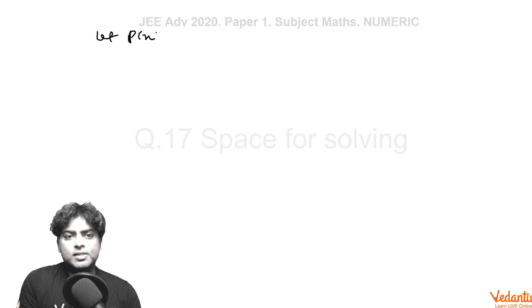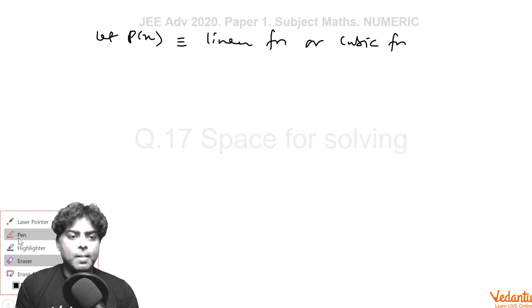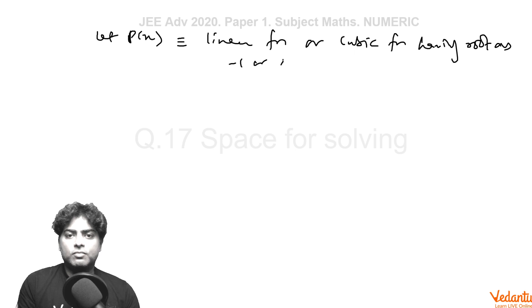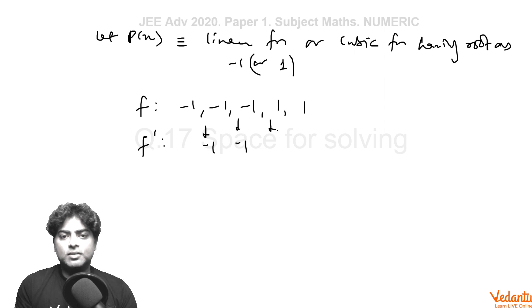Let P(x) be some linear function or cubic function having root as minus 1 or 1. See what will happen. f will be, suppose I am taking minus 1, so minus 1, minus 1, minus 1, then 1, 1. f' in that case, the roots of f' are minus 1, minus 1, alpha, and 1. Then f'', according to Rolle's theorem, has roots minus 1, beta₁, and beta₂.